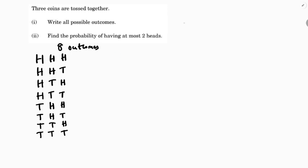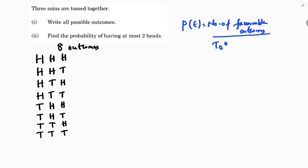The probability of an event formula is: number of favorable outcomes divided by total number of outcomes. Here, the total number of outcomes is already known to be eight.